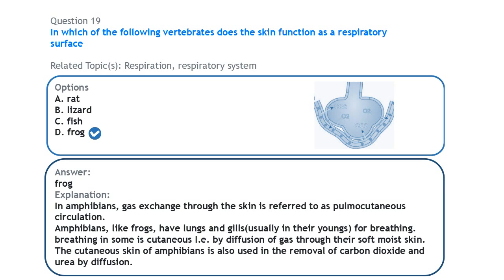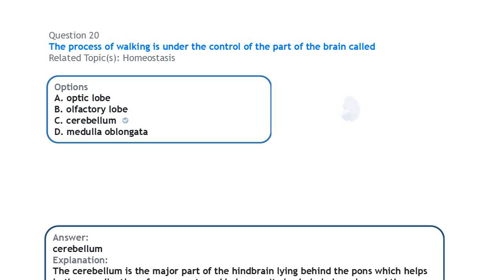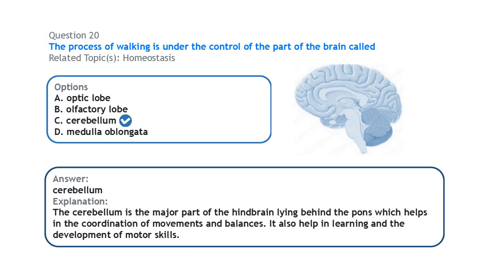Next on the musculoskeletal system: the process of walking is under the control of the part of the brain called the cerebellum. The cerebellum is the major part of the hindbrain that helps in the coordination of movement, balancing, and walking.